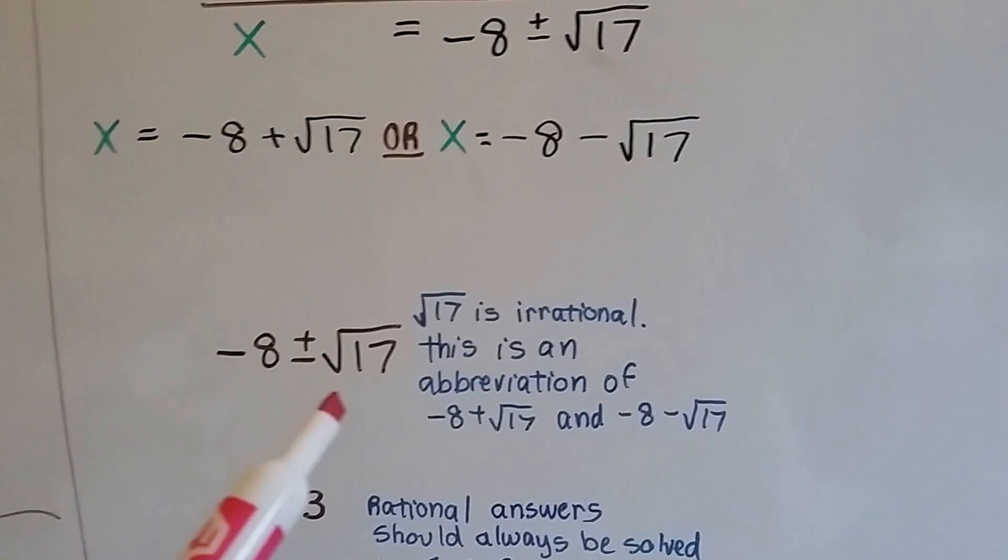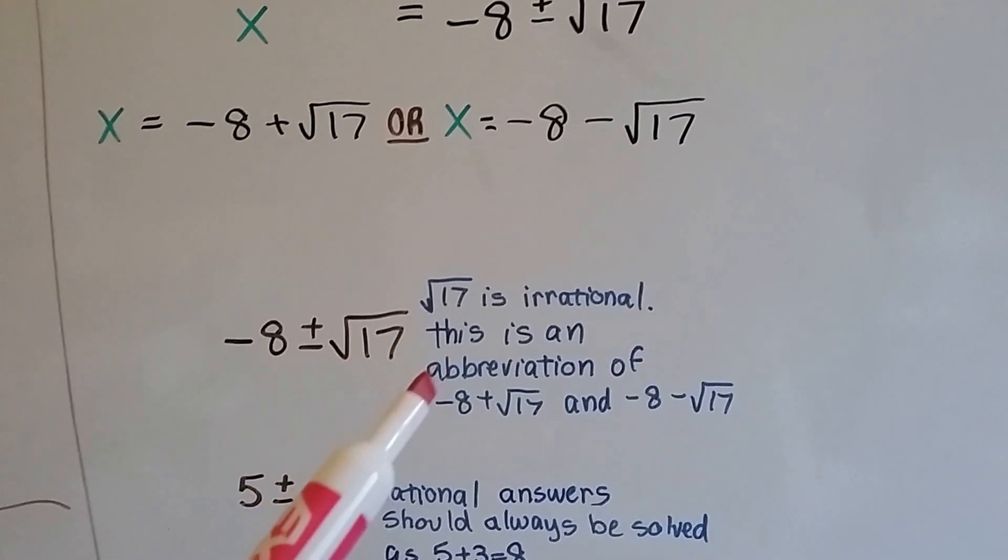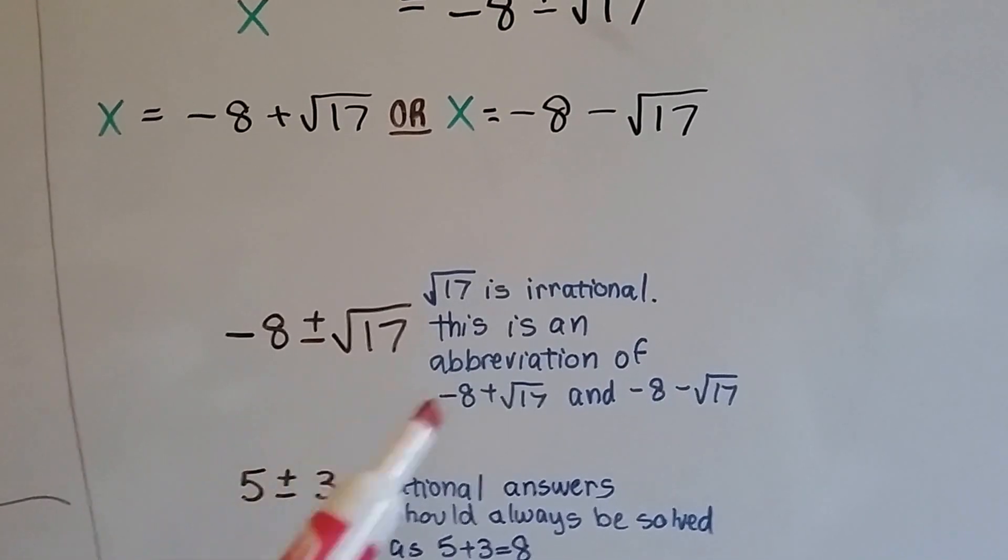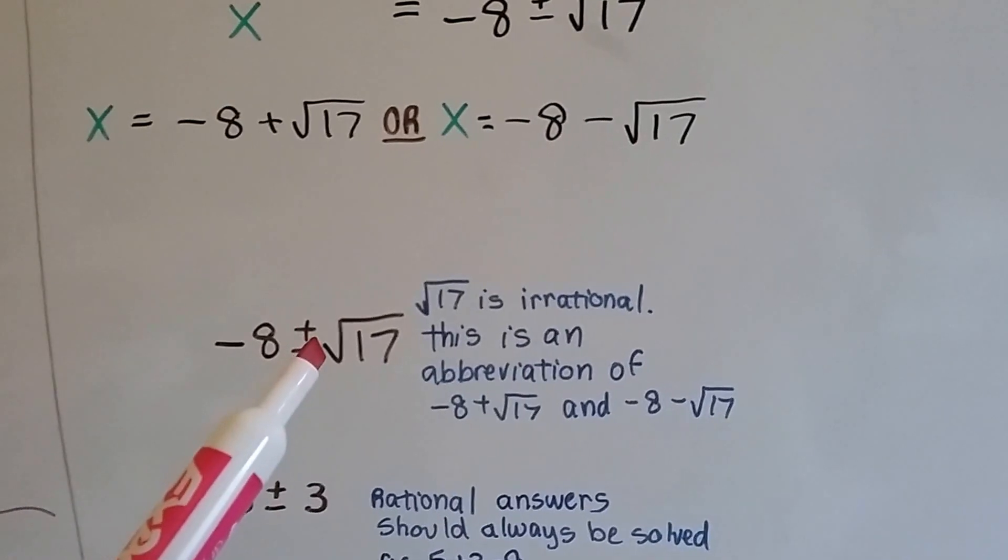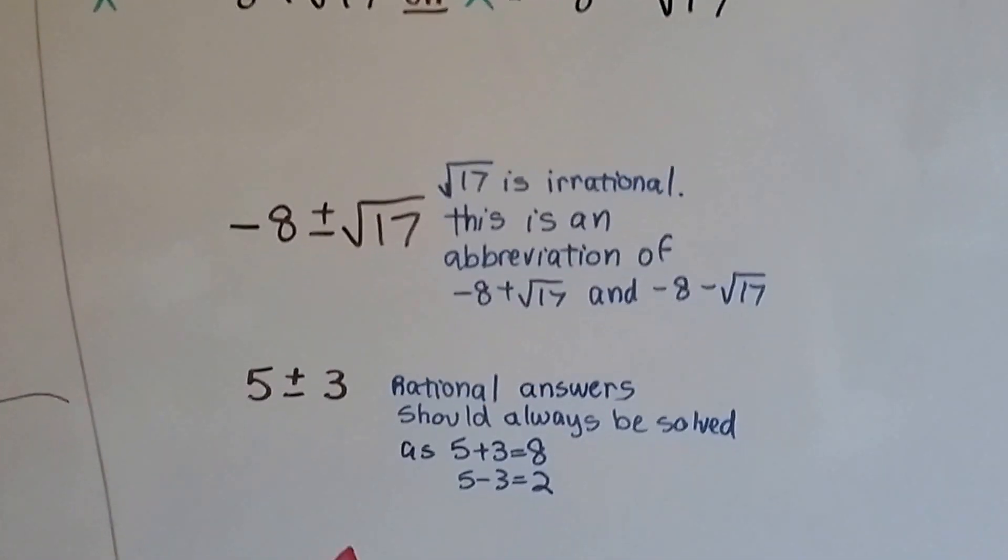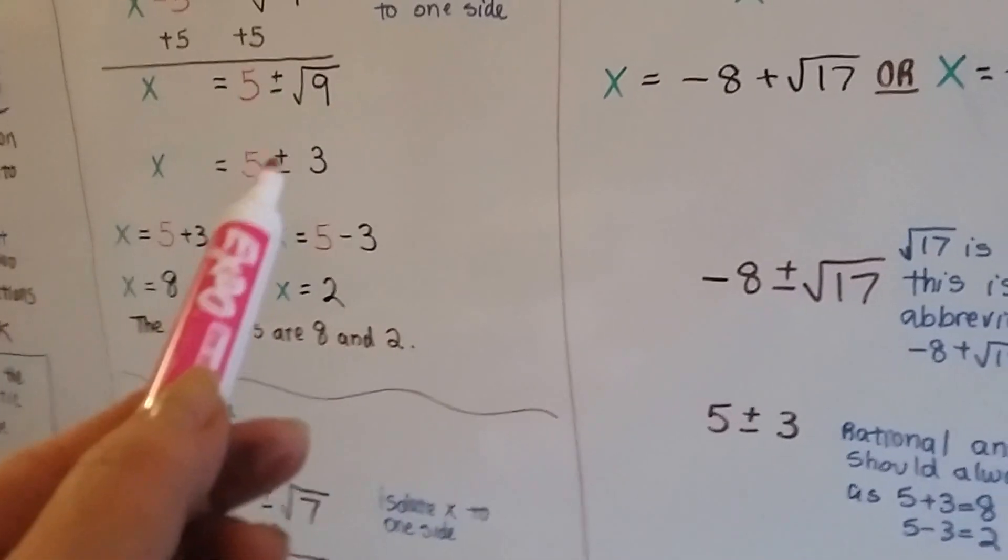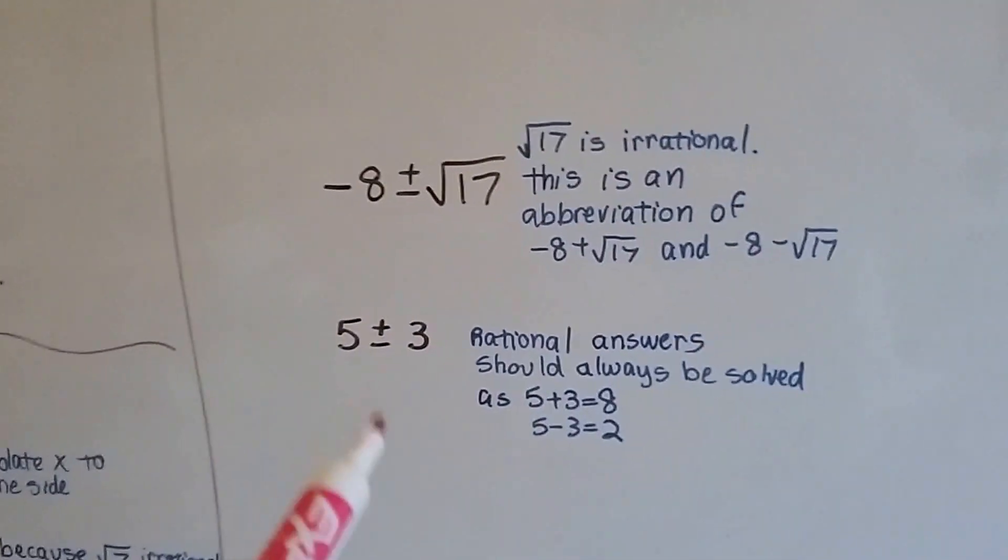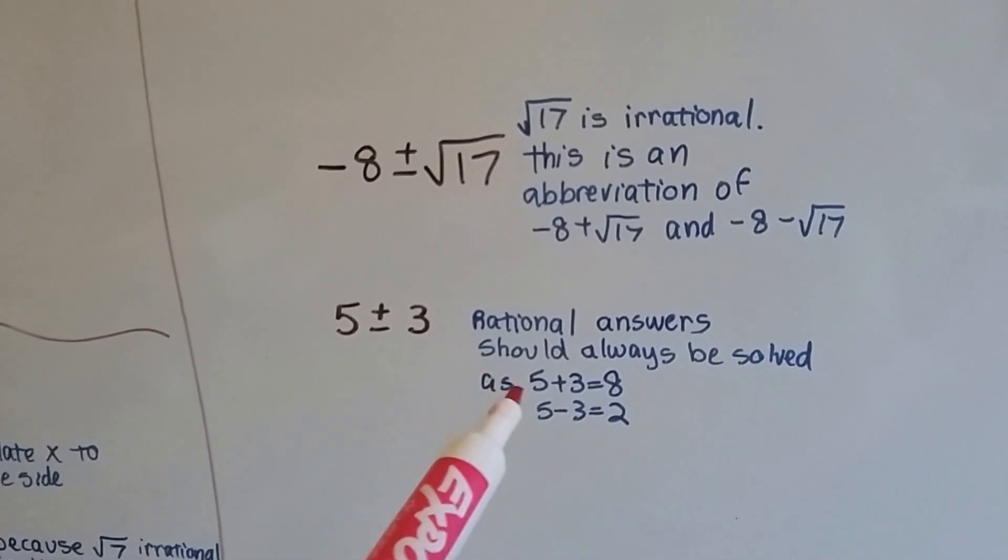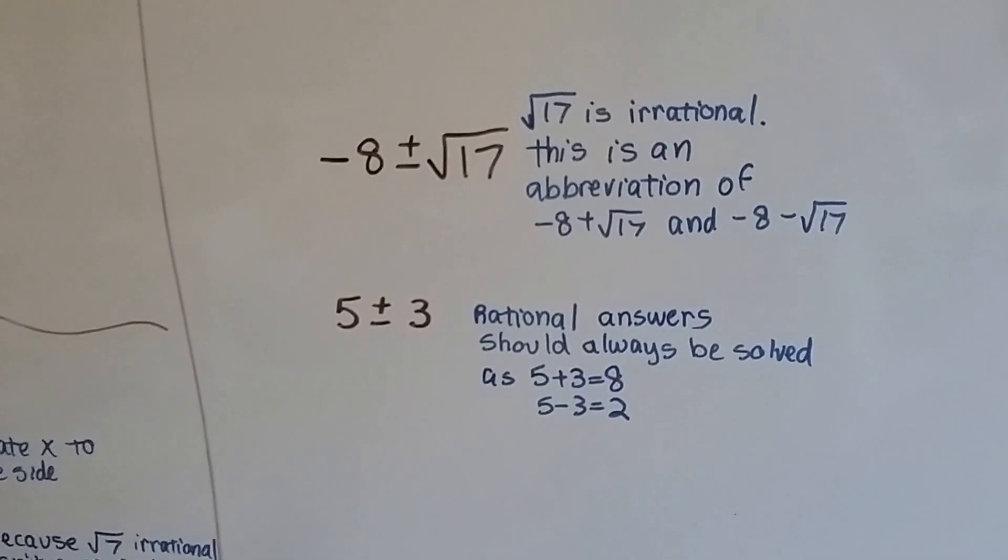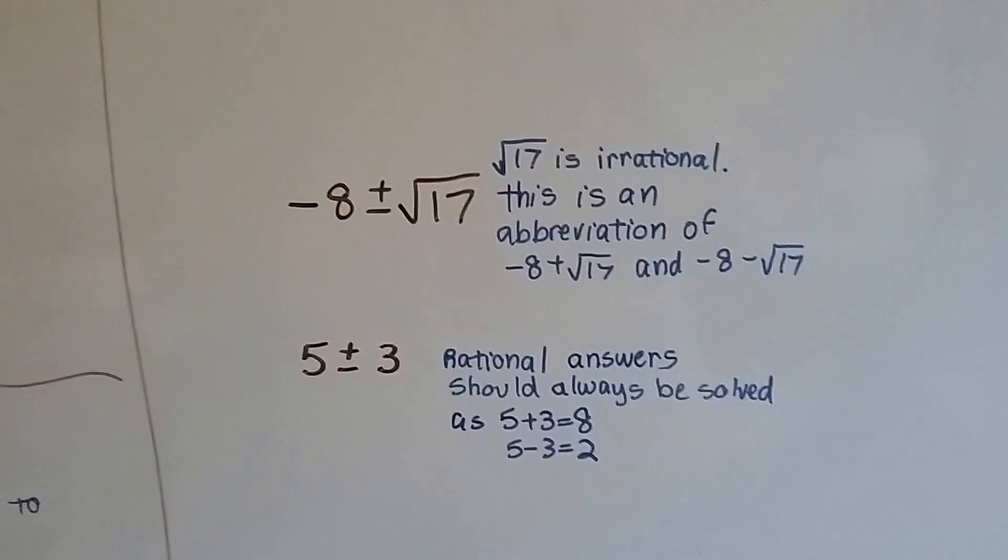And this negative 8 plus or minus square root of 17, it's because the square root of 17 is irrational. And this is an abbreviation of both of these equations. So, when this is irrational, we can just write it like this with the plus or minus. But, when it's got a rational answer like this, like we did over here, it was 5 plus or minus 3, you should always be finishing this and solving it completely as 5 plus 3, 5 minus 3 to get your 8 and 2. It's just when you have this irrational sign in here that you can throw this in as an abbreviation.